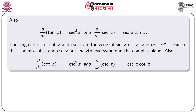The singularities of cot z and cosec z are the zeros of sin z. The zeros of sin z occur at z = nπ where n is any integer. So except the points z = nπ, cot z and cosec z are analytic everywhere in the complex plane. The derivative of cot z is -cosec²z and the derivative of cosec z is -cosec z · cot z.